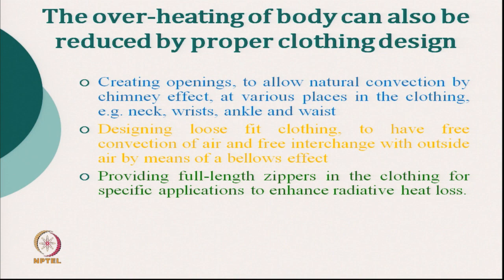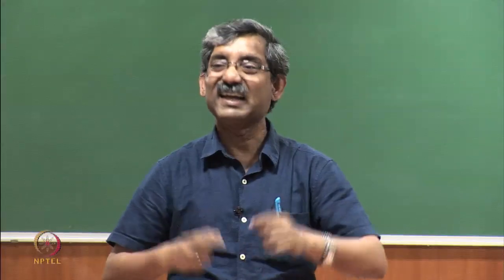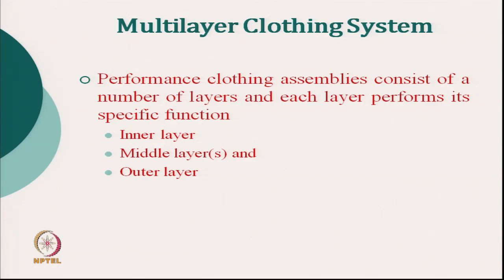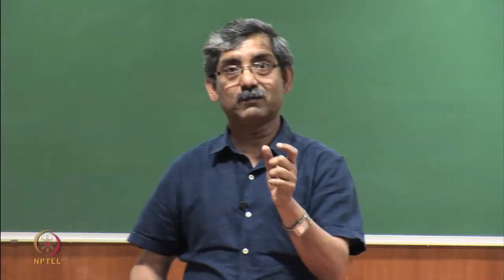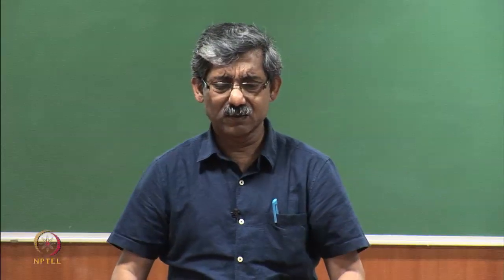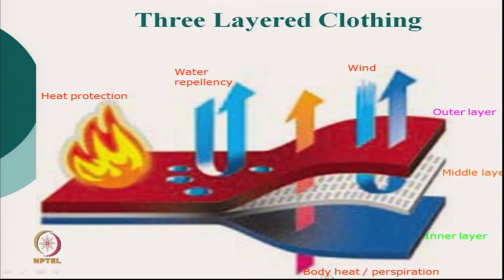For protective clothing or special protective clothing, we cannot use a single layer — we have to use multi-layer clothing, and each layer has a different function. The performance clothing assembly consists of a number of layers: it has to perform specific activity while keeping our body comfortable. There are typically 3 layers: the outer layer, middle layer, and inner layer.